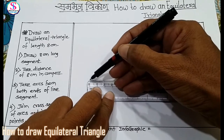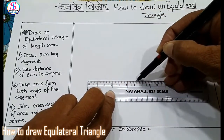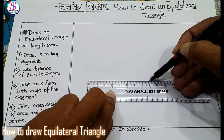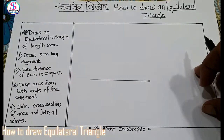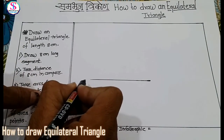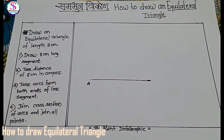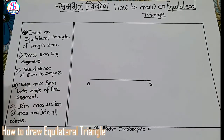So 0 is here, the first point, and up to 8 cm we have to draw a line segment. So this is the line segment. We will name it A and B. The distance between these two points is 8 cm.